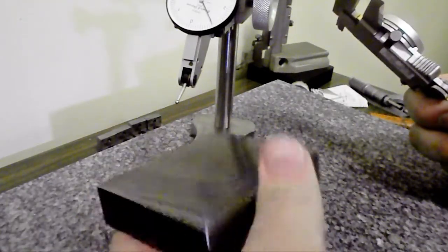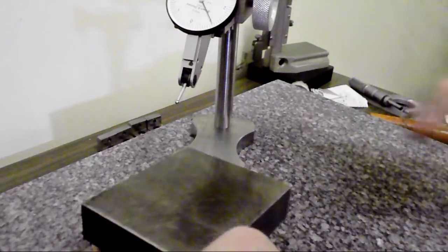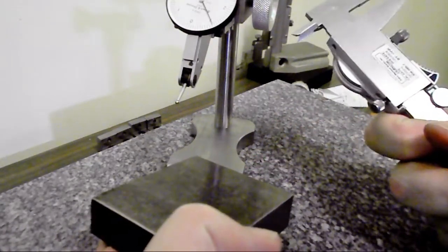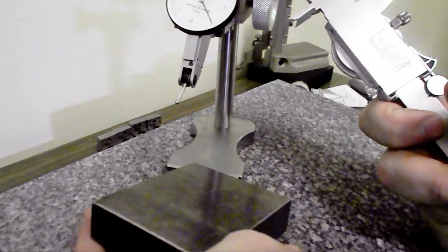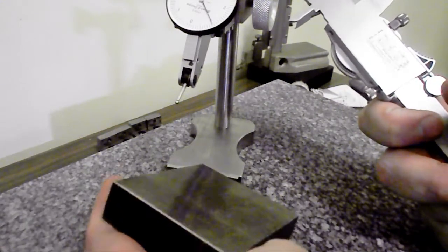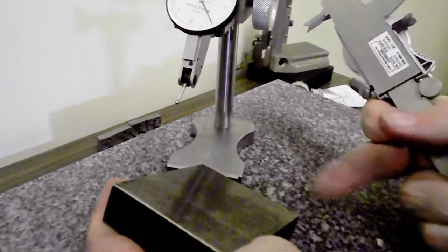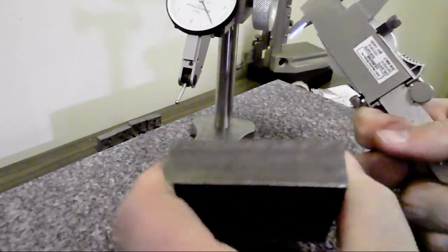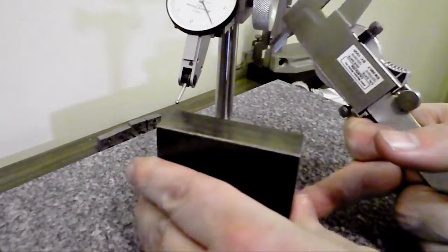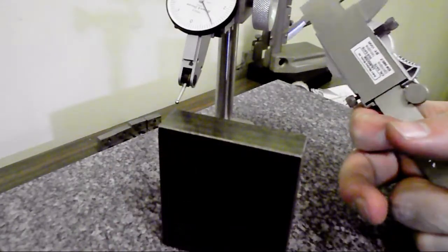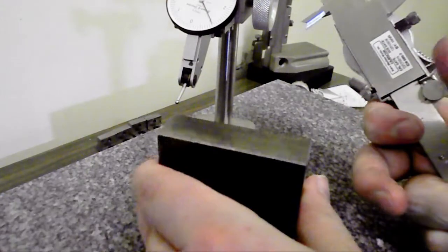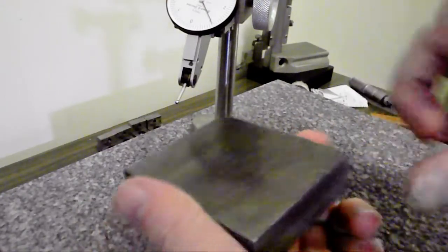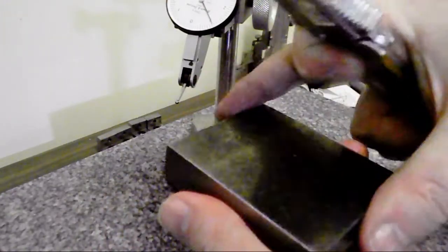I have these test pieces here that I'm going to start working on, coming up with a method to do the slots for the watchmaker's lathe carriage. The first thing that I'm doing, now these are just test pieces, but just for the sake of showing the process, I want to bring in some parallel surface.